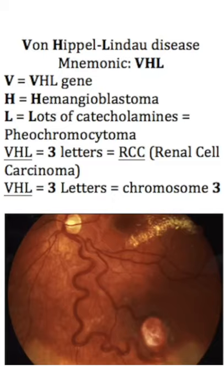VHL is characterized by hemangioblastomas in multiple body parts. Hemangioblastomas are commonly found in the cerebellum, and they cause ataxia and headache.